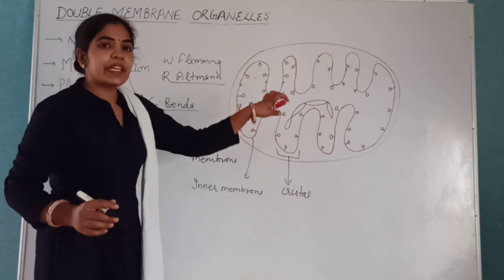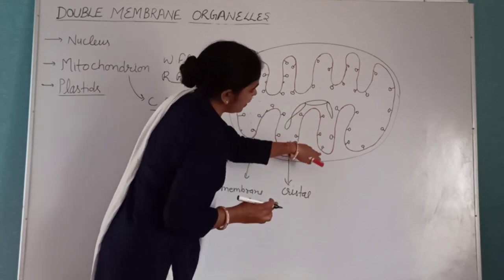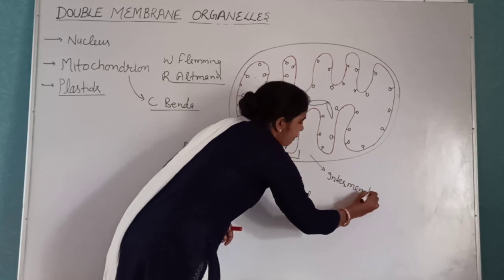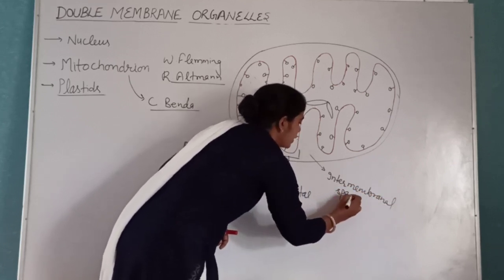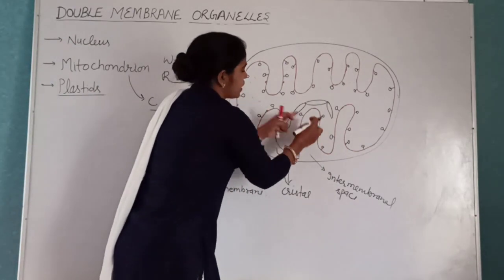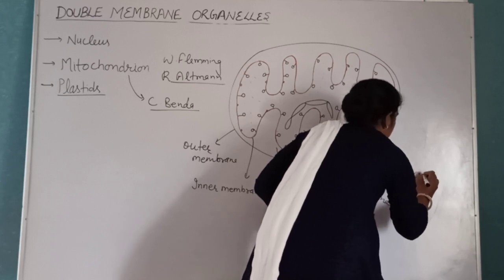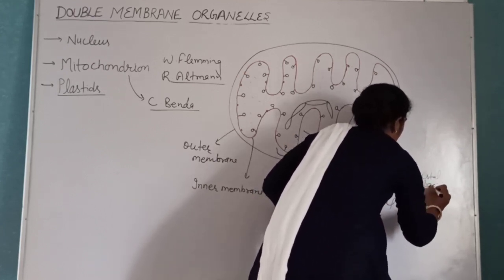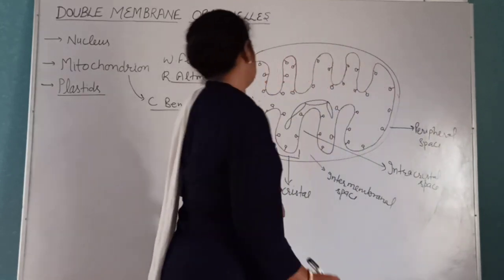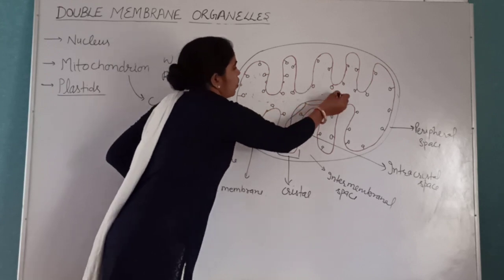These foldings of the cristae increase the surface area for enzymatic activity. The space between the outer membrane and inner membrane is called the intermembrane space. The space within the cristae is called the intracrystal space, and the region between them is the peripheral space.